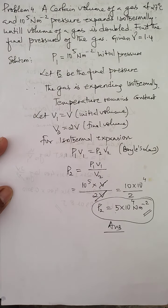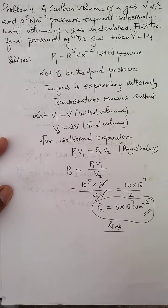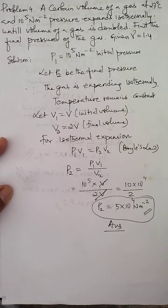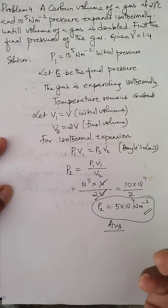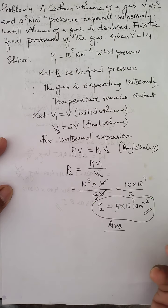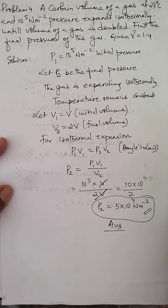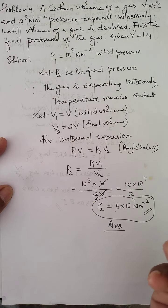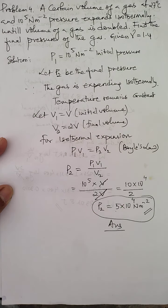This completes the simple numerical based on isothermal expansion. In total, four numerical problems have been solved to help prepare for examination-type questions. You can also solve similar problems from your textbook. We have now completed the chapter on isothermal and adiabatic processes, and from the next class, we will start the last chapter under Unit 8: the Second Law of Thermodynamics.